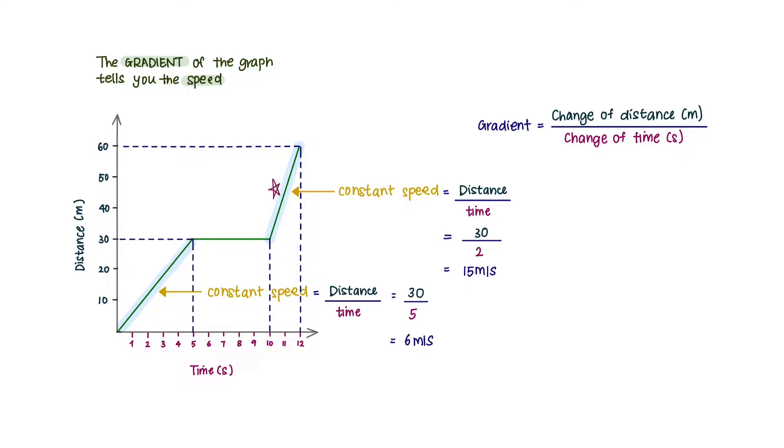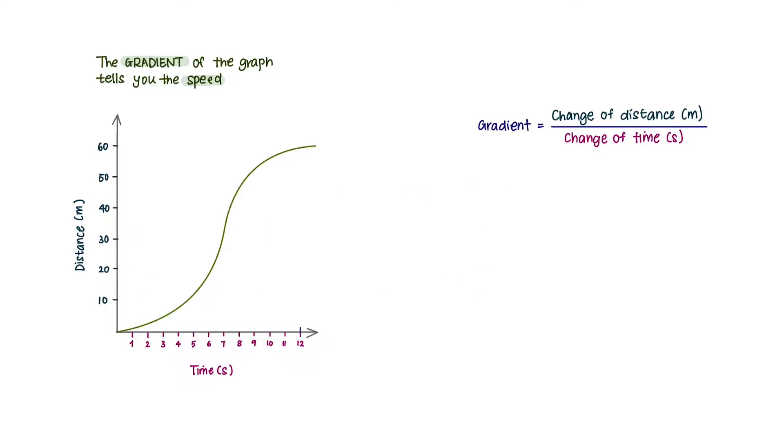A very steep slope means the object is traveling at a larger speed, and a shallow slope means the object is moving at a smaller speed. However, sometimes you don't always see a straight line.